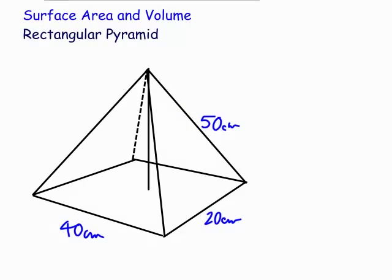Welcome to Maths with Bob. Today we're looking at surface area and volume of a rectangular pyramid. The first thing we need to do is have a quick look at what measurements we're given. We've got a slant edge of 50 centimeters and the base is rectangular — we're told it's 40 by 20.